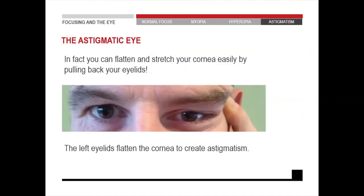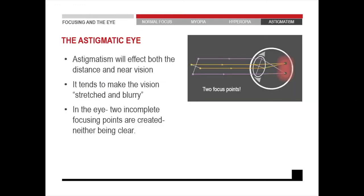If you pull your eye, you will see that all the lines in a vertical direction will be blurry and all the lines in a horizontal direction will be clear. I actually have a picture I want to show you of what it looks like at night when a person with astigmatism is driving — I'll show you afterwards. So when a person has astigmatism, it's going to affect the distance vision as well as the near vision, making the vision stretched and blurry in a certain direction.